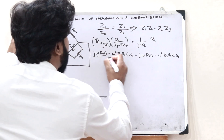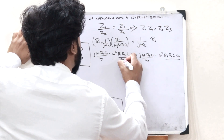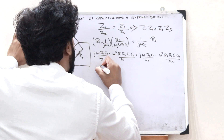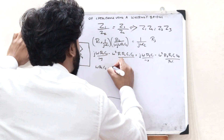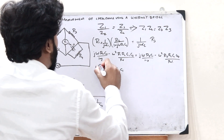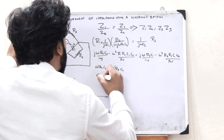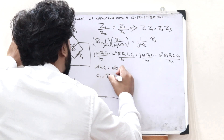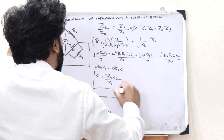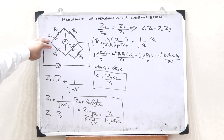Here, these are the imaginary parts and these are the real parts. Equating the imaginary parts, we get ωR4C2 = ωR3C1. Omega and omega cancel, and therefore C1 = R4·C2 / R3. This is the value of the unknown capacitance C1.